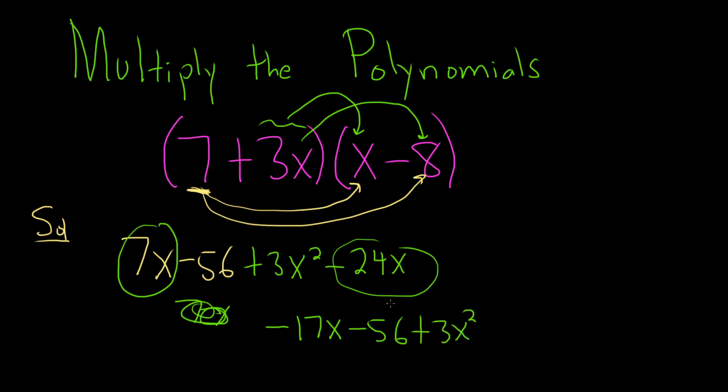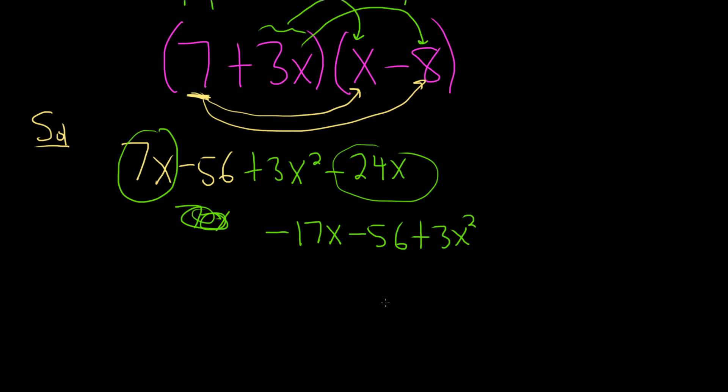And that's an OK answer. It's just people usually write the term with the biggest exponent first. Let's go ahead and do that. So this will be 3x squared minus 17x minus 56. And that'll be the final answer.